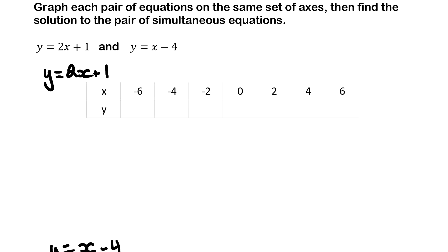Next we're going to graph each pair of these equations on a set of axes and find a solution to the pair. First we need to create a table of values by substituting each of these x values into that equation. So for the first equation y equals 2x plus 1, we go y equals 2 times minus 6 plus 1 and that equals negative 11.